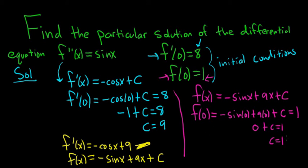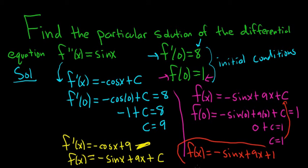Last but not least, we take the 1 and plug it in for C. So the final answer is f(x) = -sin(x) + 9x + 1. That would be the particular solution of this differential equation.